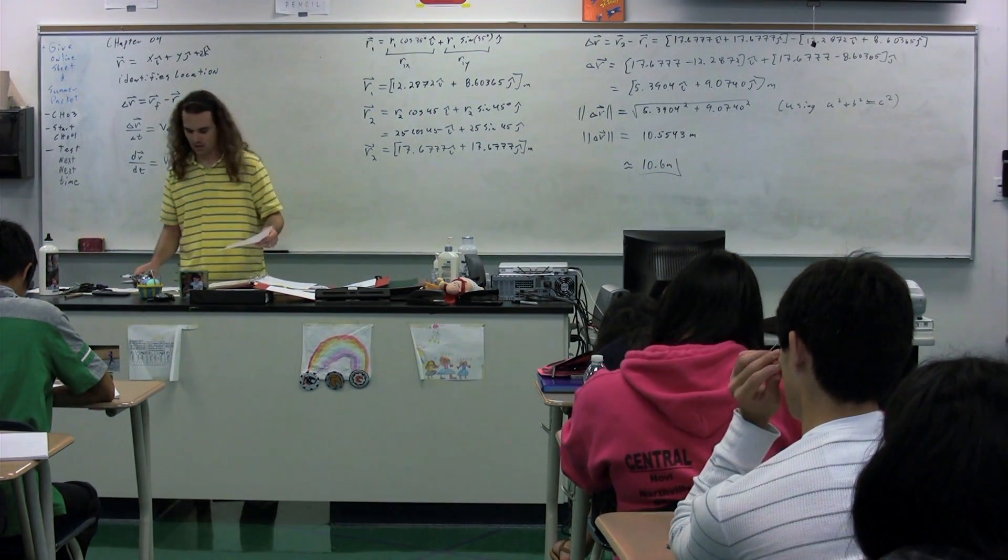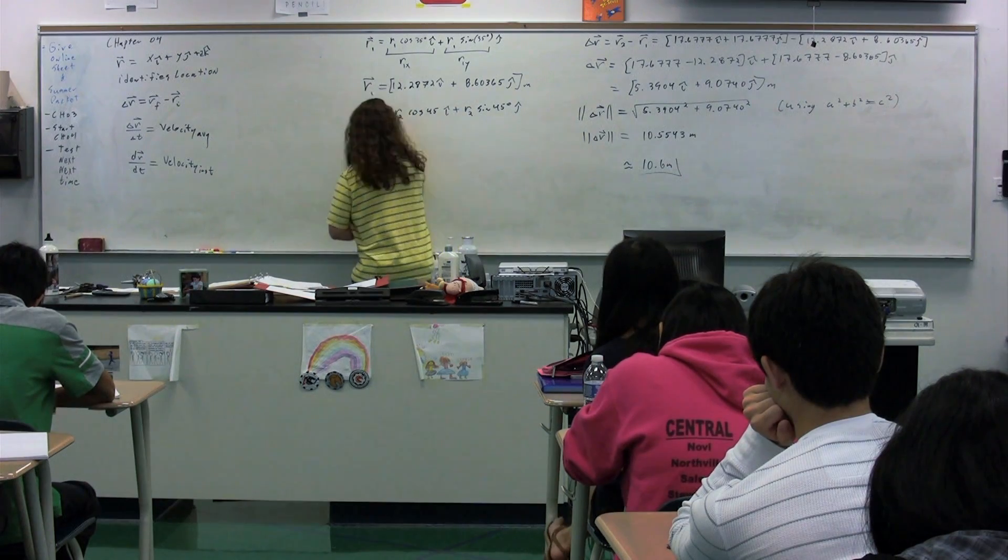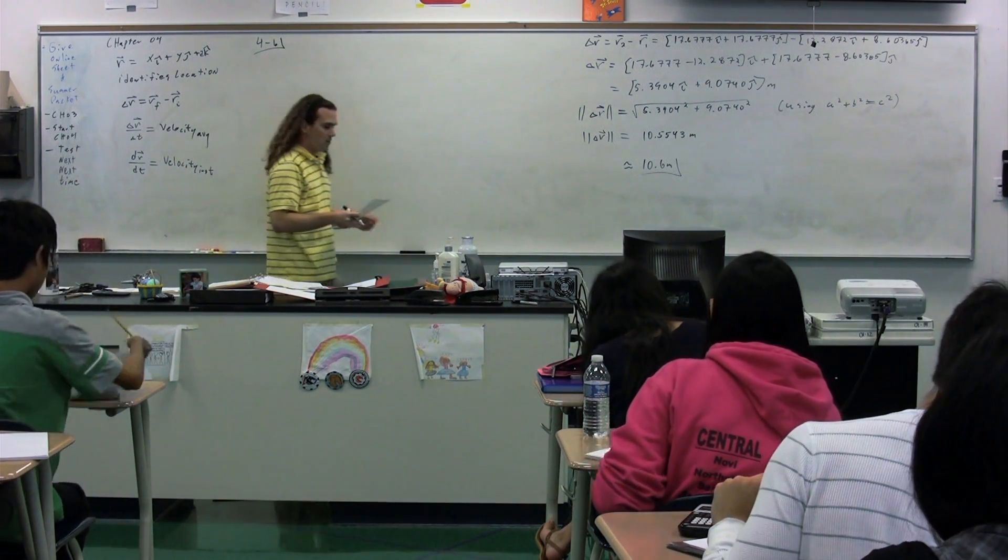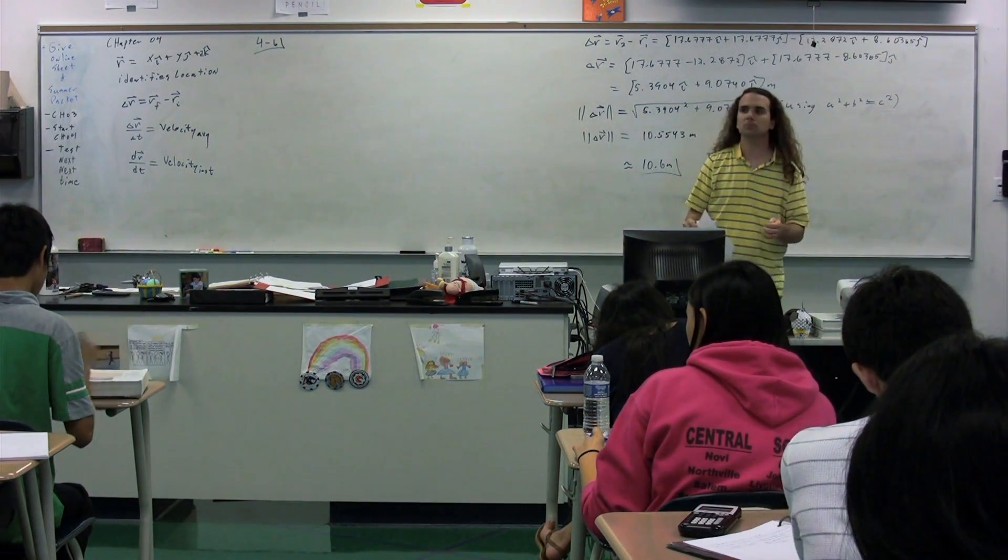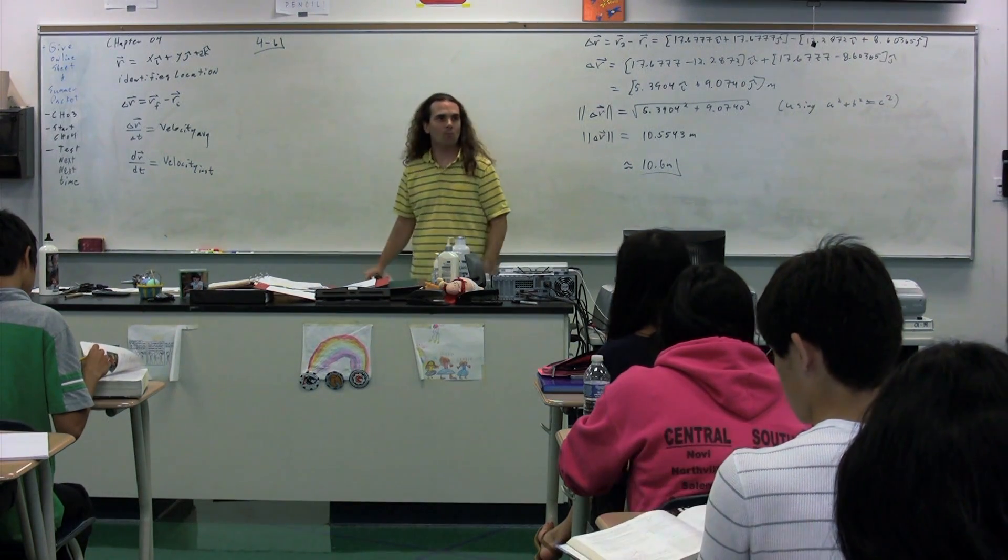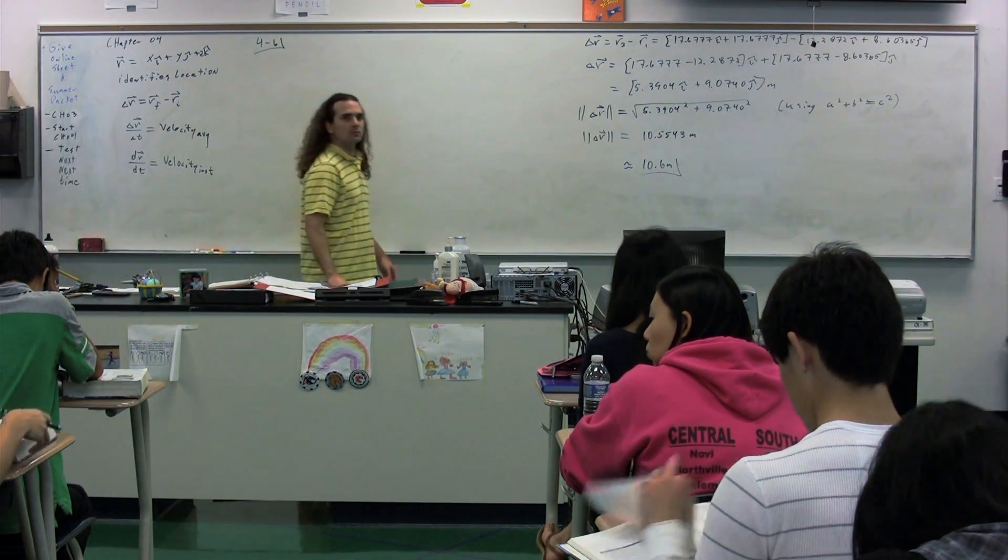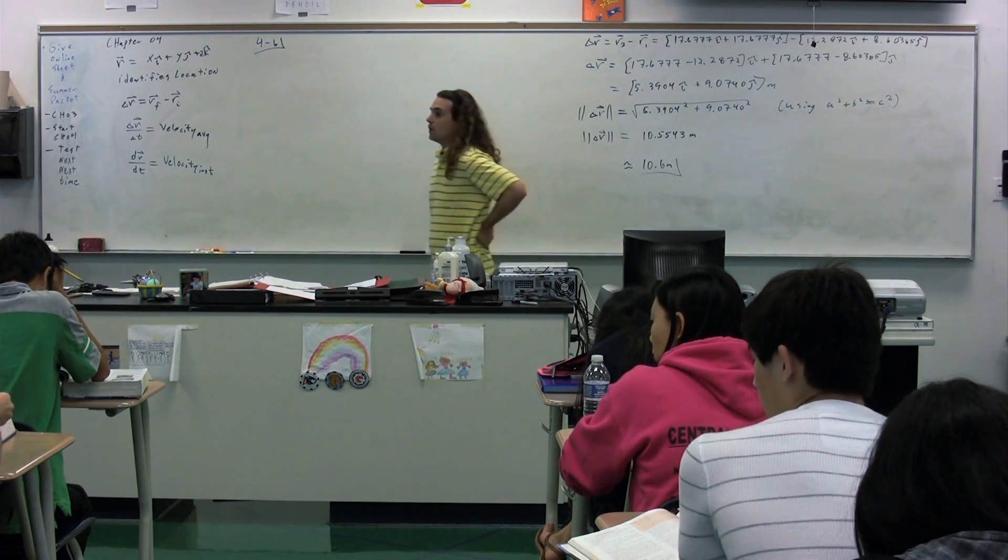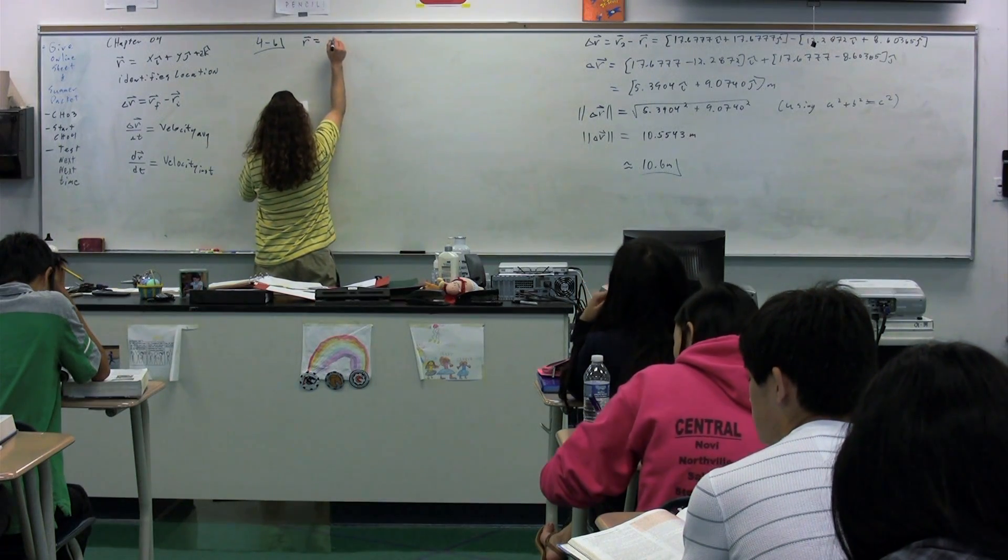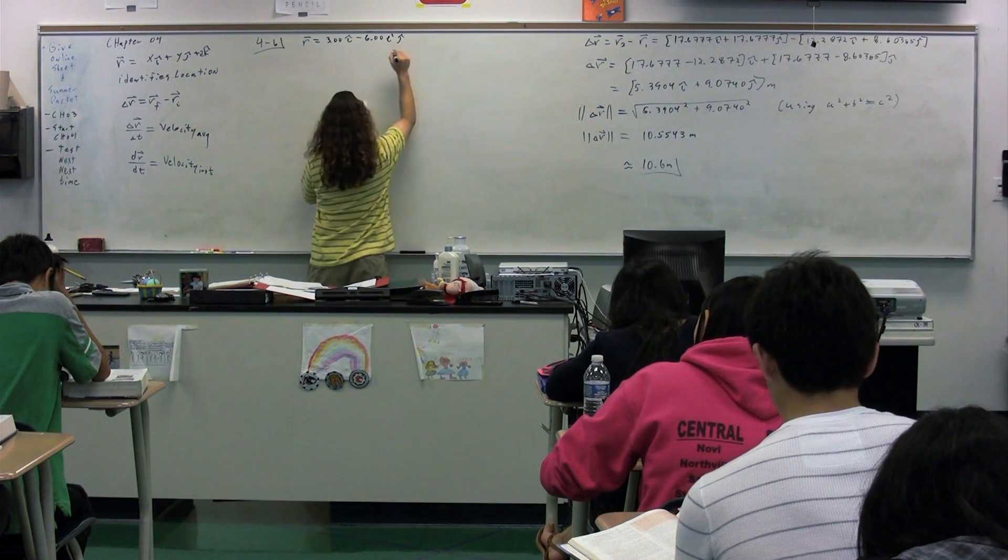So let's walk through an example using the position vectors. Problem six, chapter four. Emily X, if you could please read the problem. I'm going to write the position of the particle variable times, so you can see an expression of the particles 4.00 of i minus 6.00 t squared j.